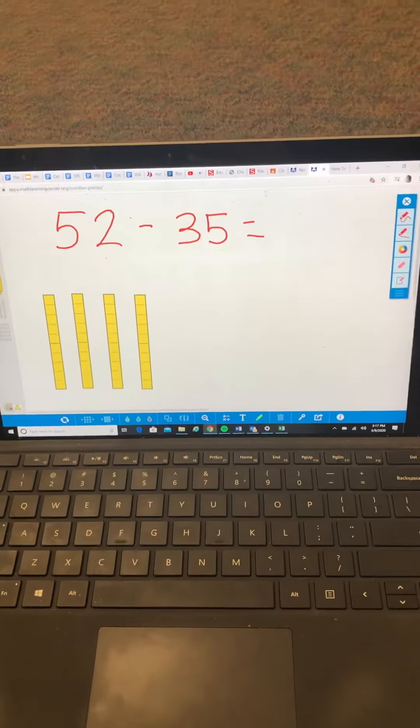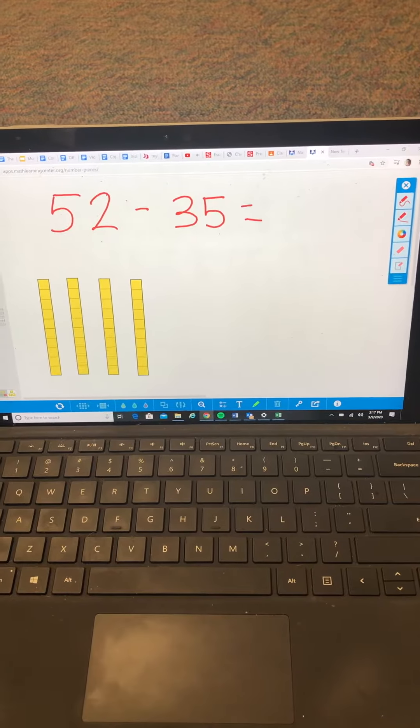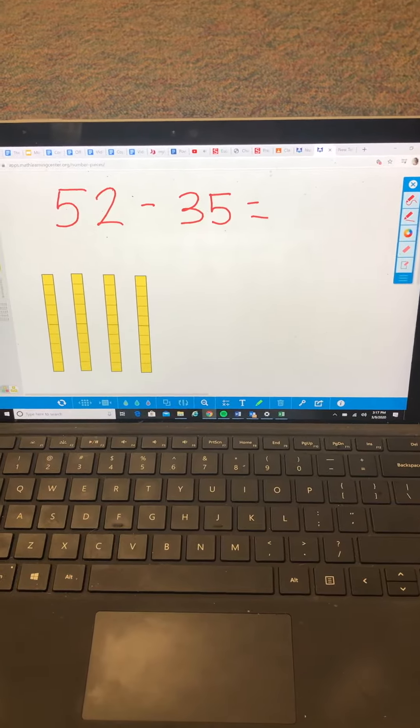Good afternoon. It is March 10th and this week we are working on subtraction strategies. A lot of students are still getting stuck thinking that they can do 2 minus 5 is 3, and so a lot of students want to say that the answer to this equation 52 minus 35 is 23, which is incorrect.